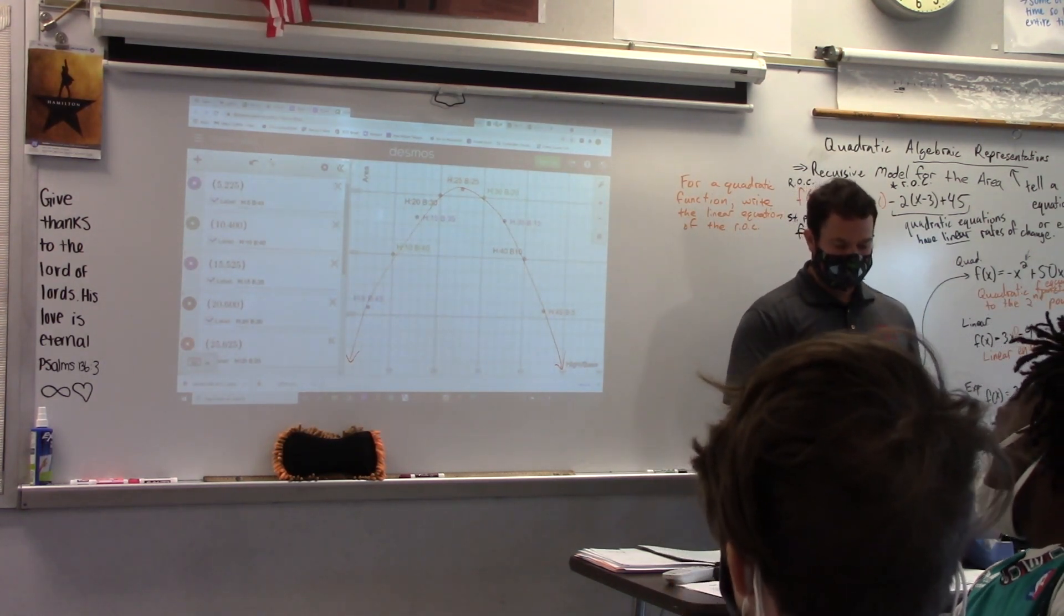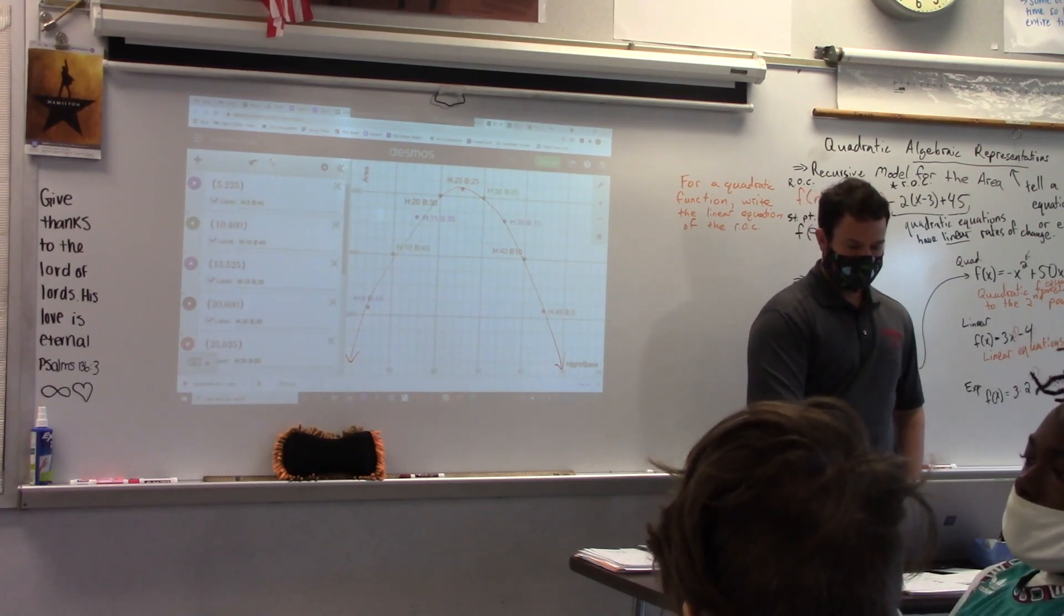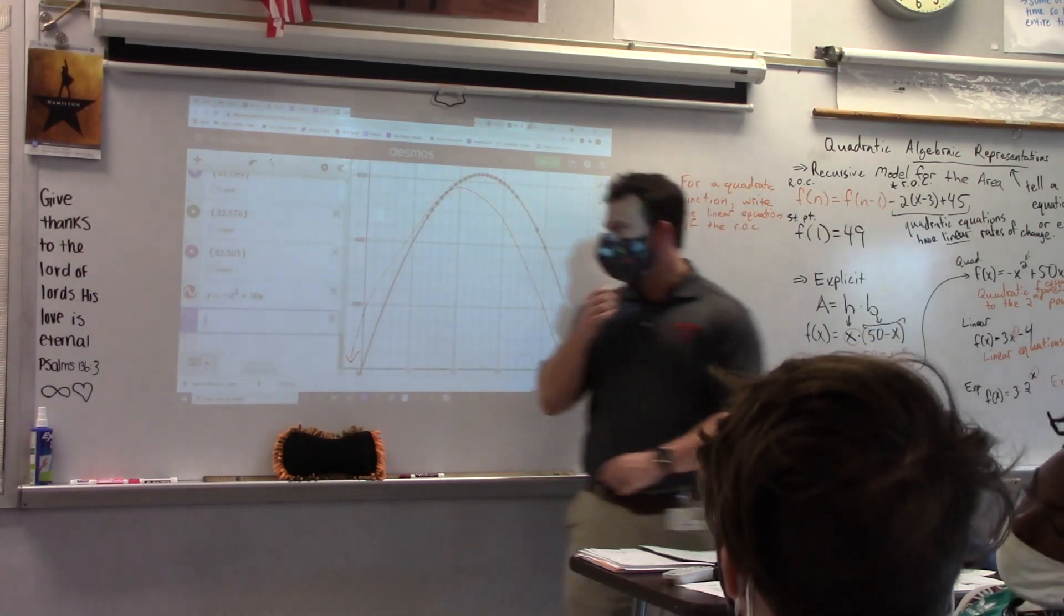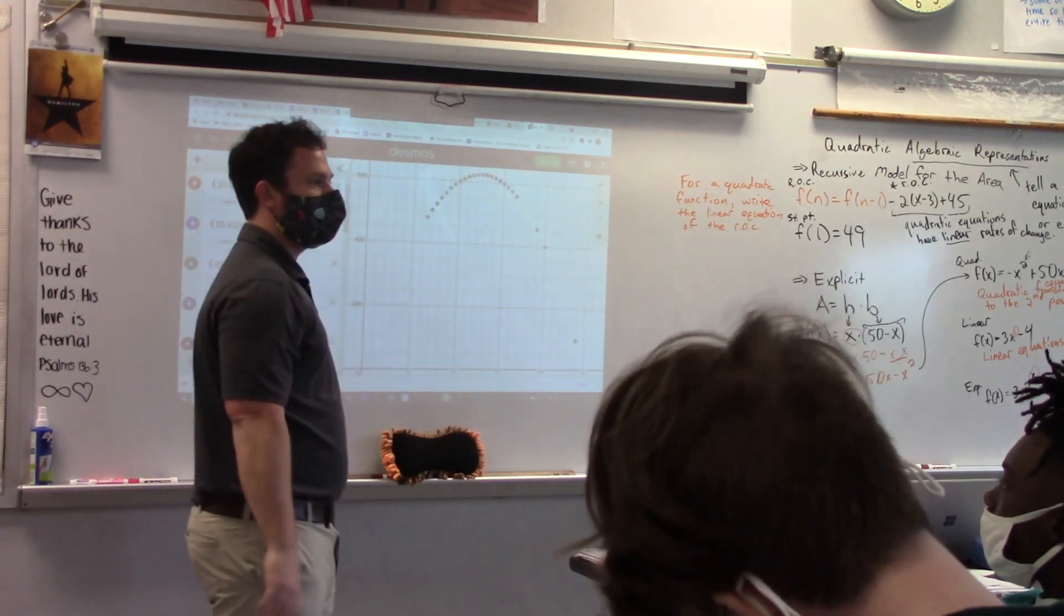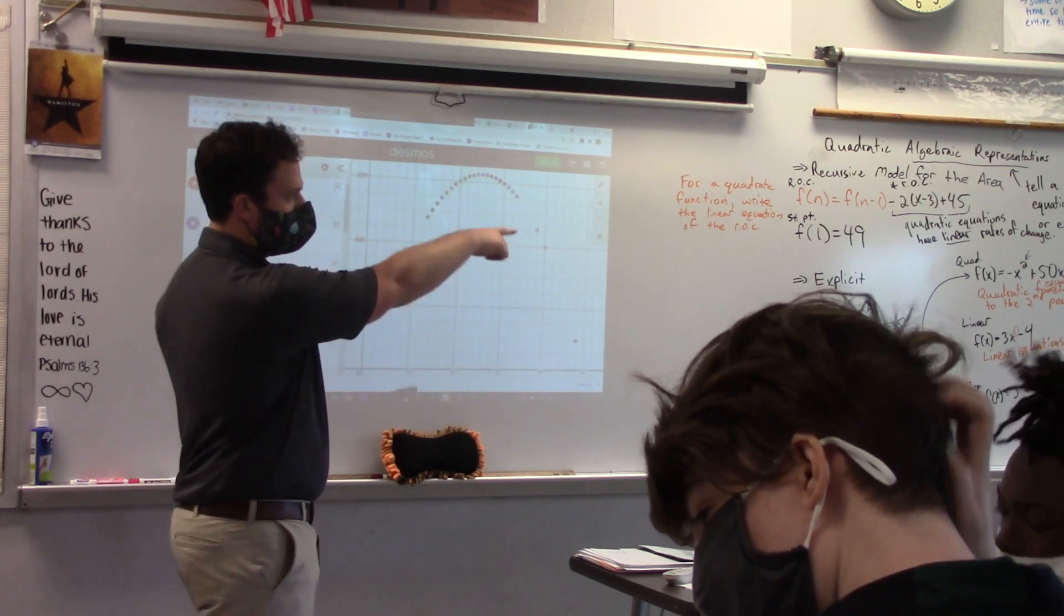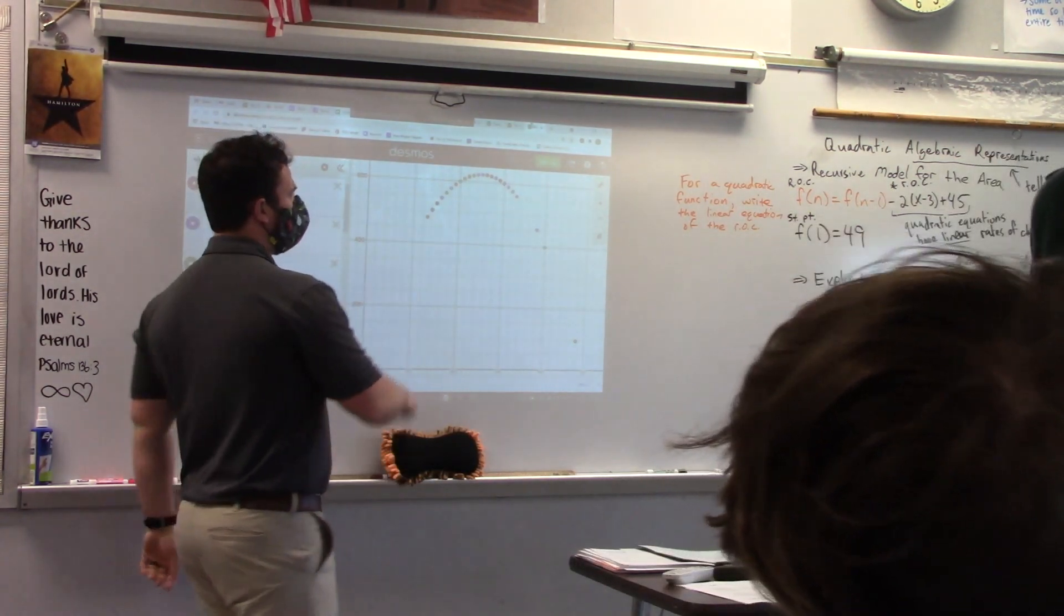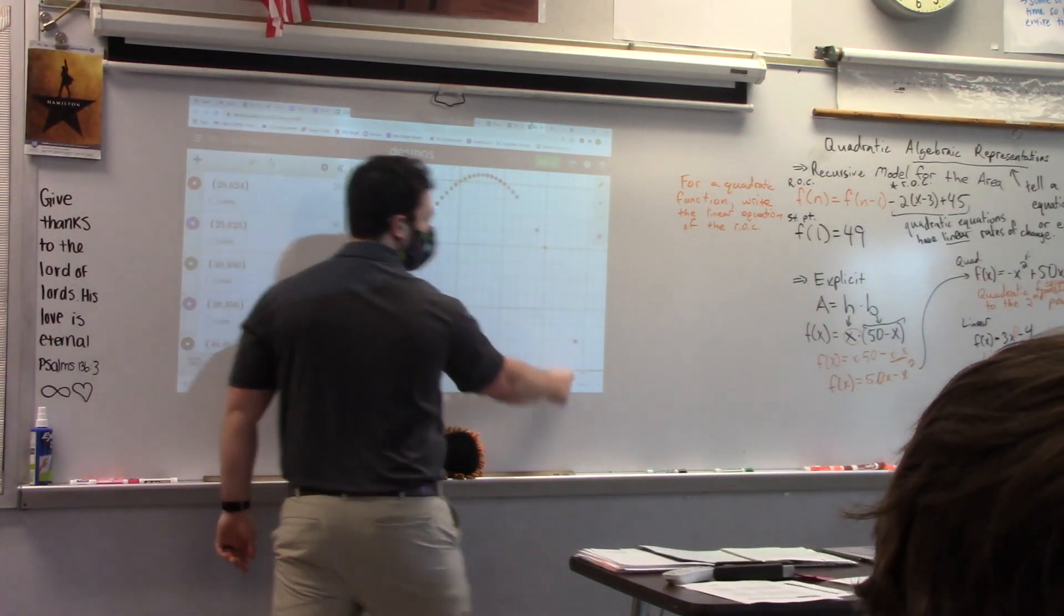You can see it even more clearly here. The more data points you have, the better you can see the shape. Now, did we write an equation for this? Yeah. If that equation is correct, our graph should go through all of these points.